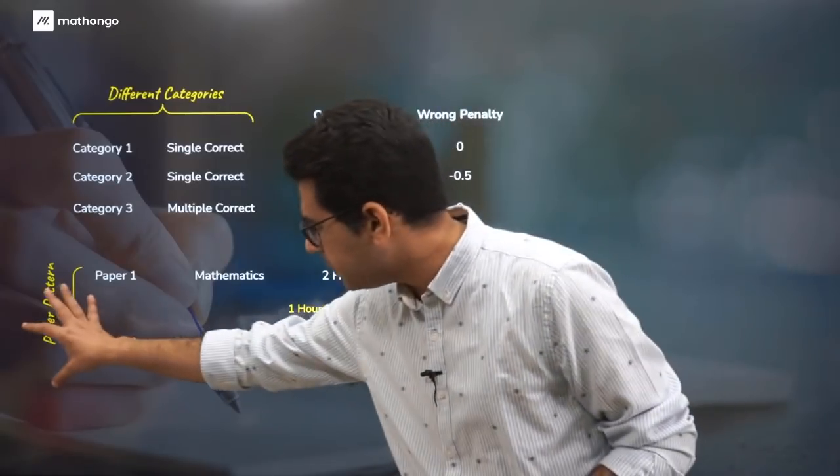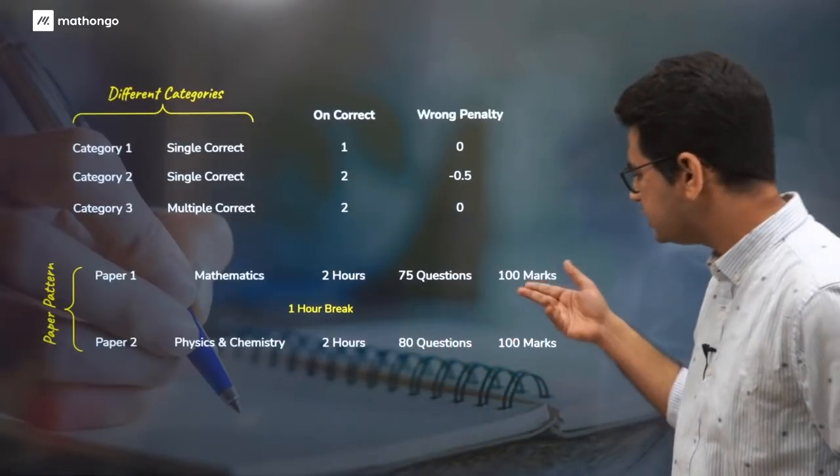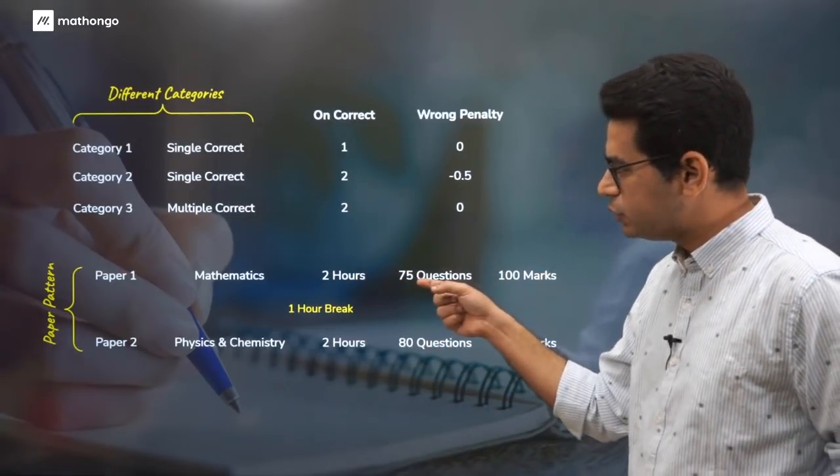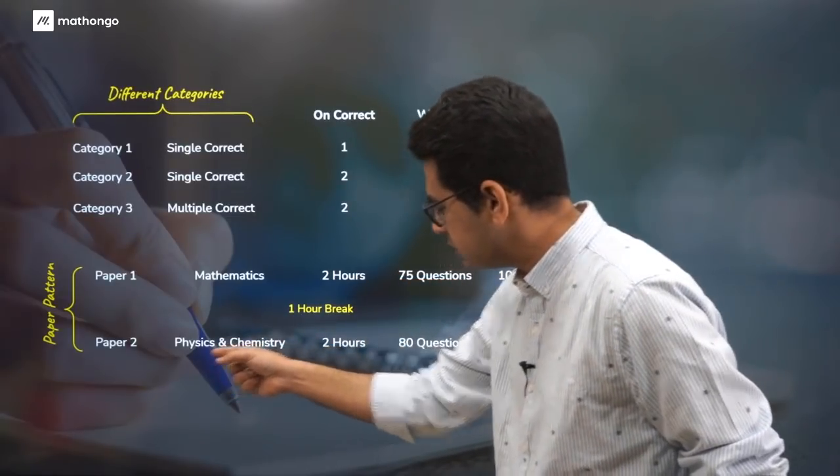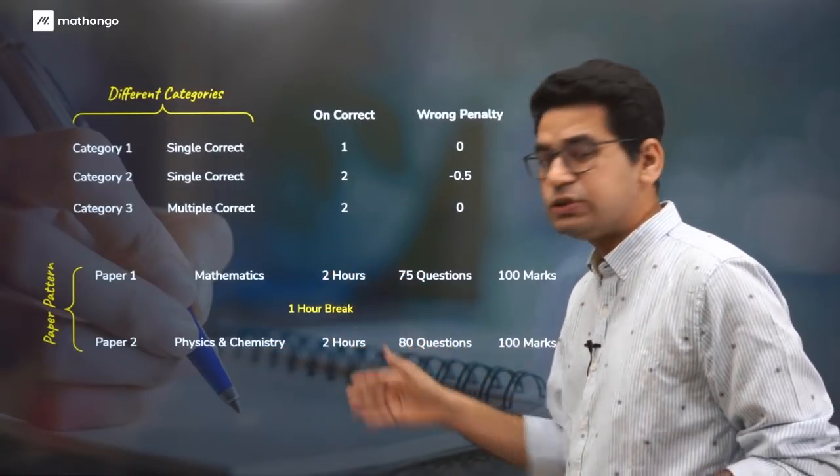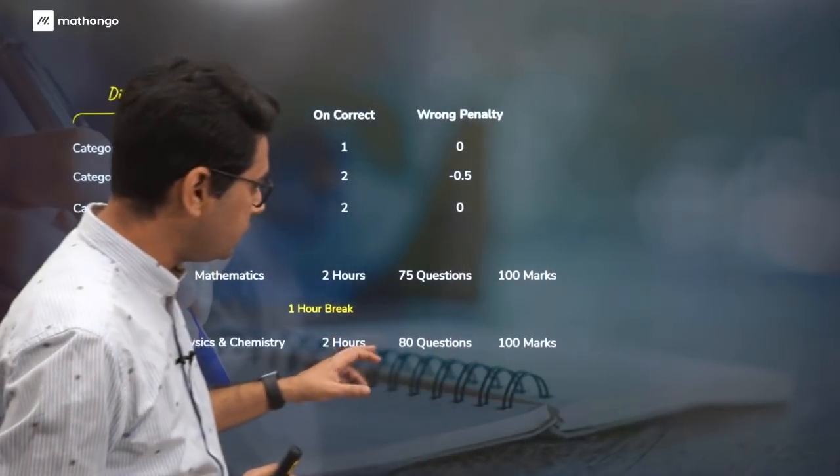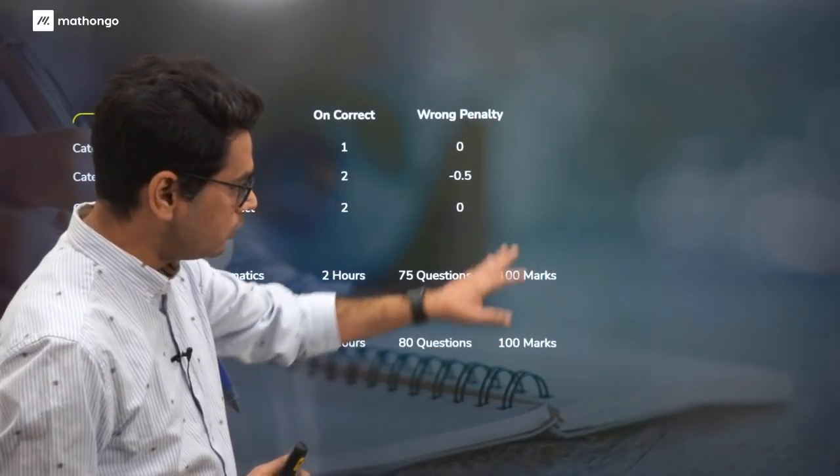If four options were correct and you mark all four, you will fetch two marks. If you mark three out of four correct, you will be awarded three-fourths of two, that is 1.5 marks. So partial marking as it happens in JEE Advanced is the criteria here, because it's an OMR based exam as of 2021.